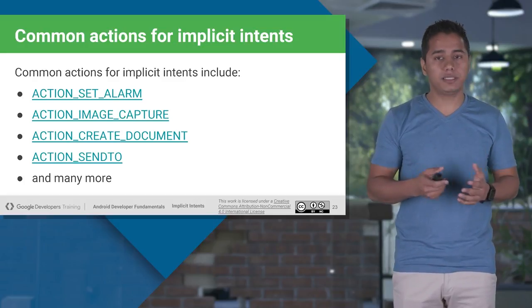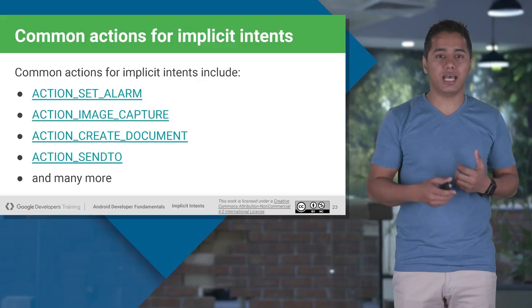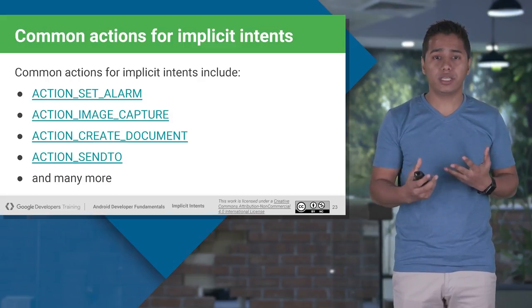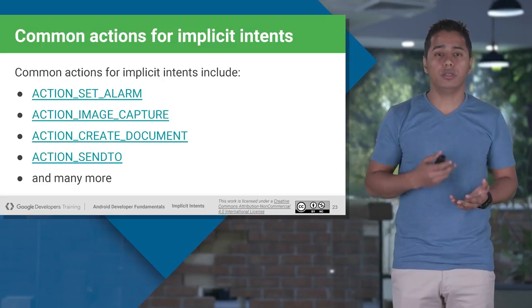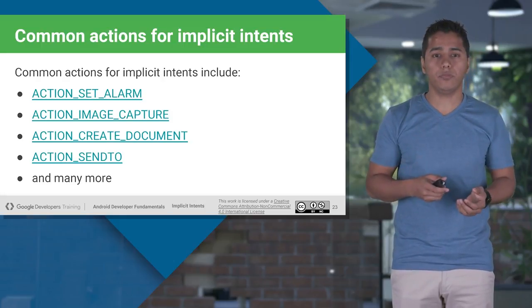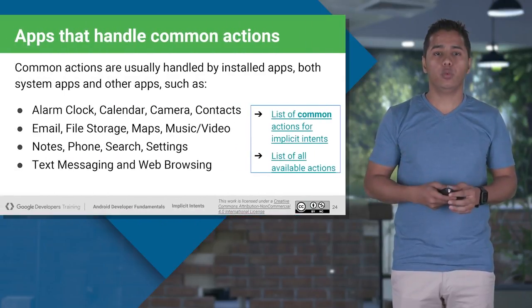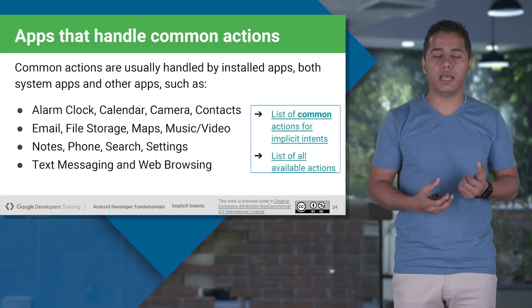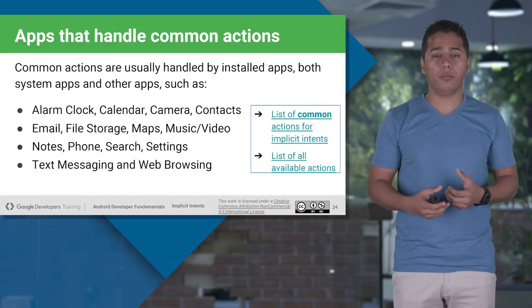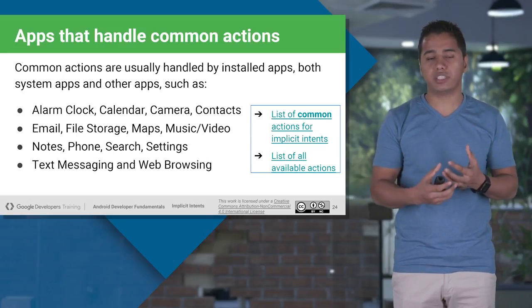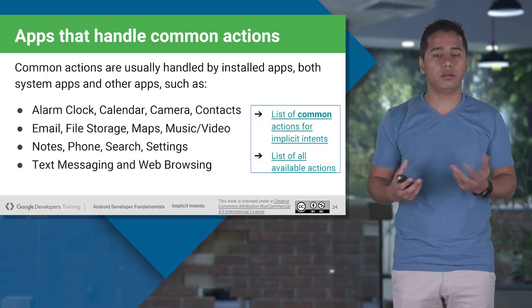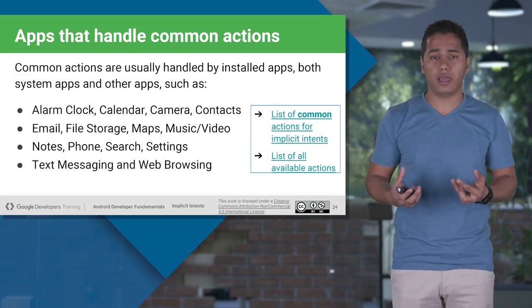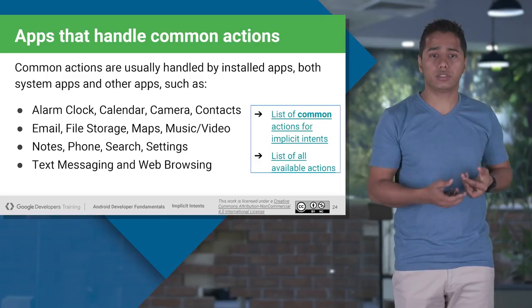There are some common actions for implicit intents, such as ACTION_SET_ALARM, ACTION_IMAGE_CAPTURE, and ACTION_CREATE_DOCUMENT. These can be used for setting an alarm, opening a camera, or creating a file, respectively. Apps like alarm clock, calendar, camera, and contacts can handle alarm-related actions. Similarly, you can use emails, file storage, maps, or music/video files to access external storage — there will be a common action for accessing external storage as well.